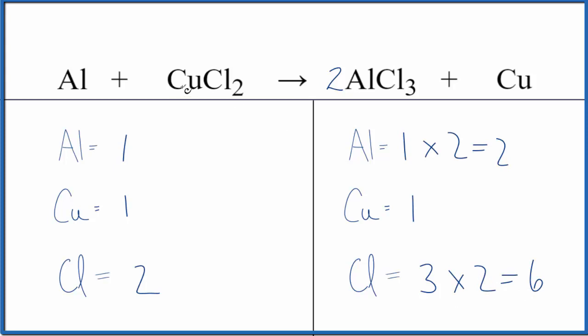Now I can put a 3 in front of the copper II chloride. 1 times 3 gives me 3 coppers, and 2 times 3 gives me 6 chlorines. So the chlorines are balanced. Since the aluminum and copper are by themselves, that's easy to fix. I'll put a 2 as the coefficient for aluminum. 1 times 2 gives me 2.